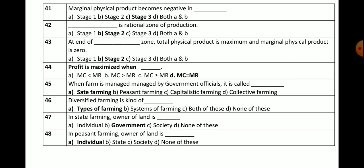Question number 45: When a farm is managed by government officials, it is called — options: state farming, peasant farming, capitalistic farming, or collective farming. The correct answer is state farming. In state farming, the whole farm is managed by government officials.